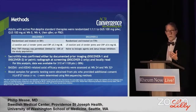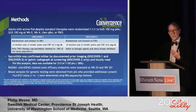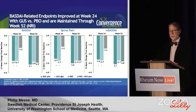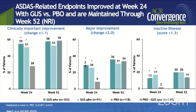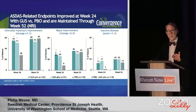Here are the results using BASDAI scores: there was statistical separation between treatment groups and placebo across two different dose arms of guselkumab, sustained out through week 52. Even looking at just the spinal pain question, there seemed to be a difference. Using a modified BASDAI with the peripheral joint question removed, and using the more objective ASDAS score, there was also clear-cut improvement including what we call ASDAS inactive disease. So for all intents and purposes, this drug actually helps symptoms in axial PsA.